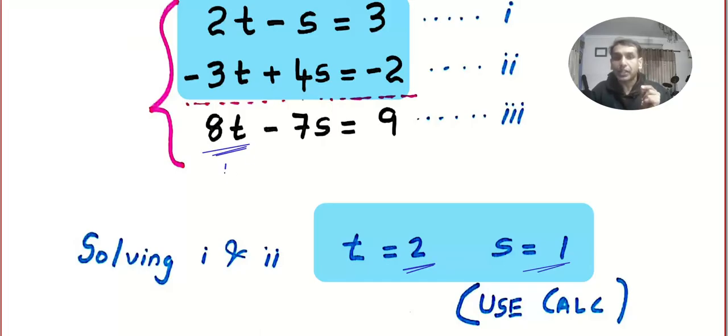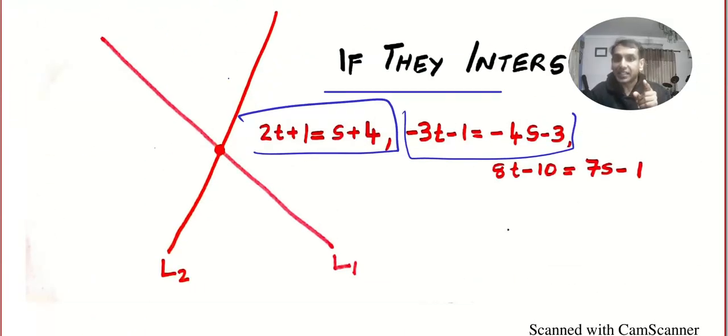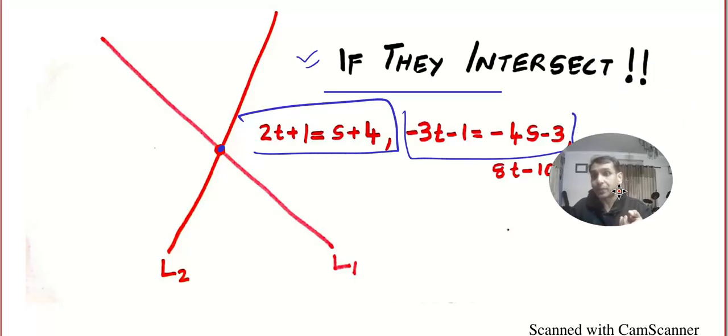8 multiplied by 2, 16 minus 7 multiplied by 1, 7 is equal to 9. Oh, that's true. That means I am able to find a value of t and s which can balance all the equations. And what does it mean? It means there is a common point because I told you, I started like: if they intersect or if there is a common point. So I am able to find the common point.